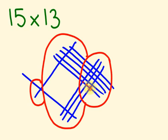We have 1, 2, 3, 4, 5, 6, 7, 8, 9, 10, 11, 12, 13, 14, 15 there. Carry the 1. 1, 2, 3, 4, 5, 6, 7, 8. Plus 1 is 9. And that 1 there is 195.